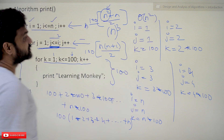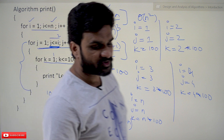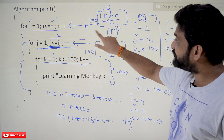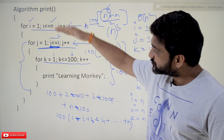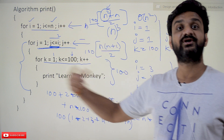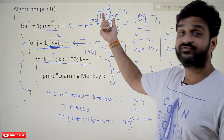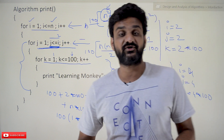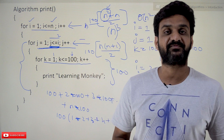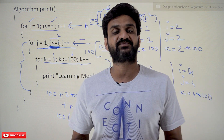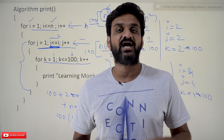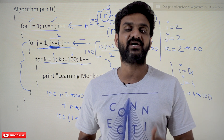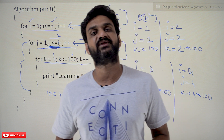We express this as Theta of n² because every time, based on the value of n, it will do exactly that many comparisons — Θ(n²). These are some of the examples, and we'll solve more in our next video. Hope you got clarity on this concept. Thanks for watching. If you haven't subscribed to our channel, please subscribe and press the bell icon for latest updates. Post any doubts in the comment section, give us a like, and share this video with your friends.